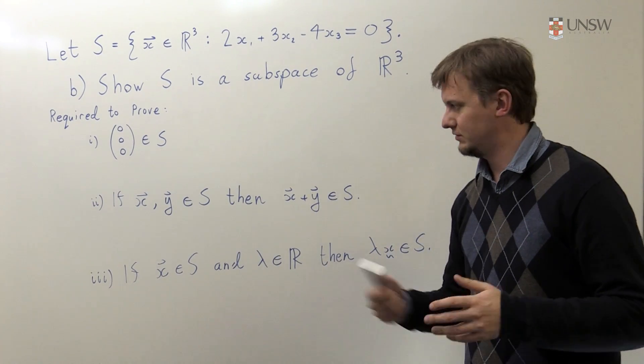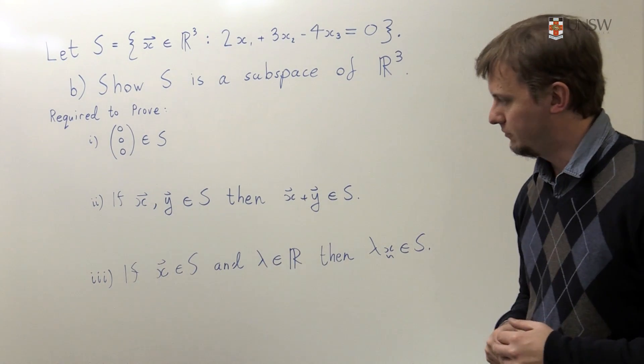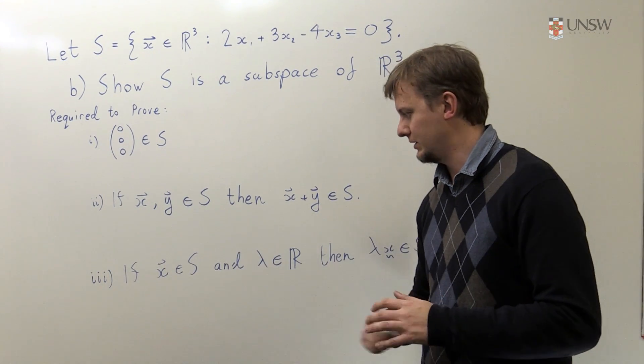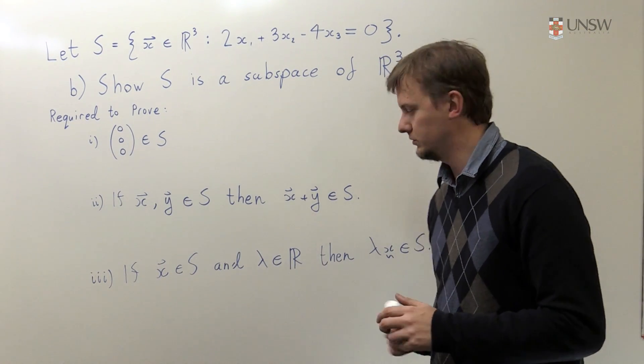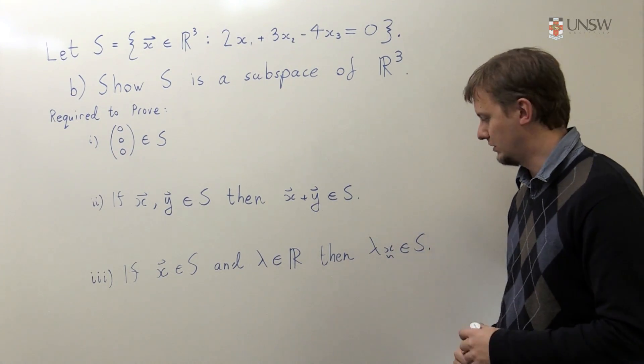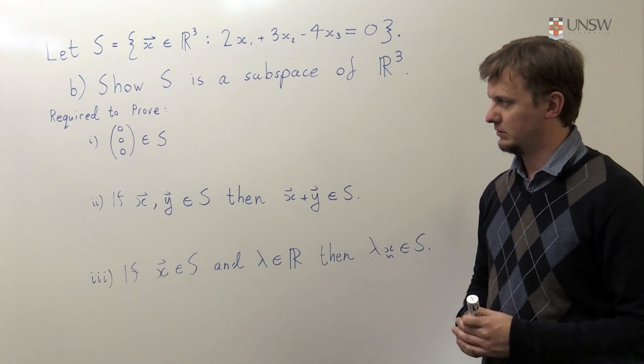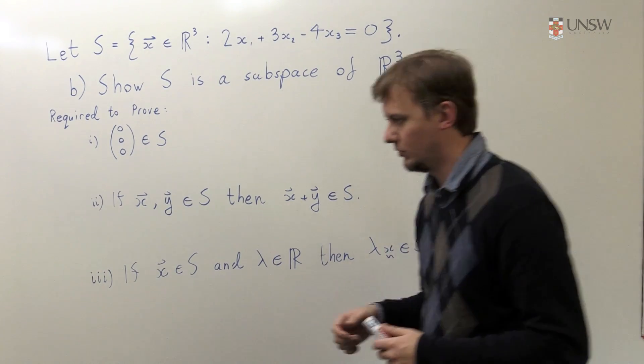Then we have to show that if we take two elements of S and sum them together, we also have something in S. And finally, we need to show that if we take something from S and some scalar from the reals, then that scalar times that vector, we have to show that that is also in S. So this first one is actually fairly easy - we can just do it right here on the board.